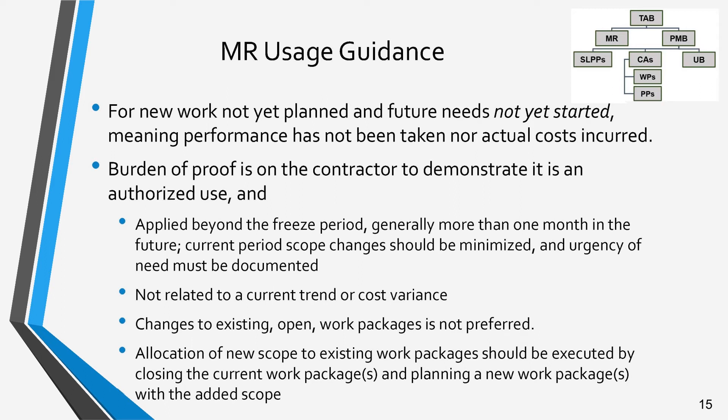This is generally more than one month in the future. Current period scope changes should be minimized and any urgency of need must be documented. If the MR budget allocation impacts an active existing work package or set of work packages, it is preferred that those affected work packages are closed and replanned with the additional scope and budget in new work packages.